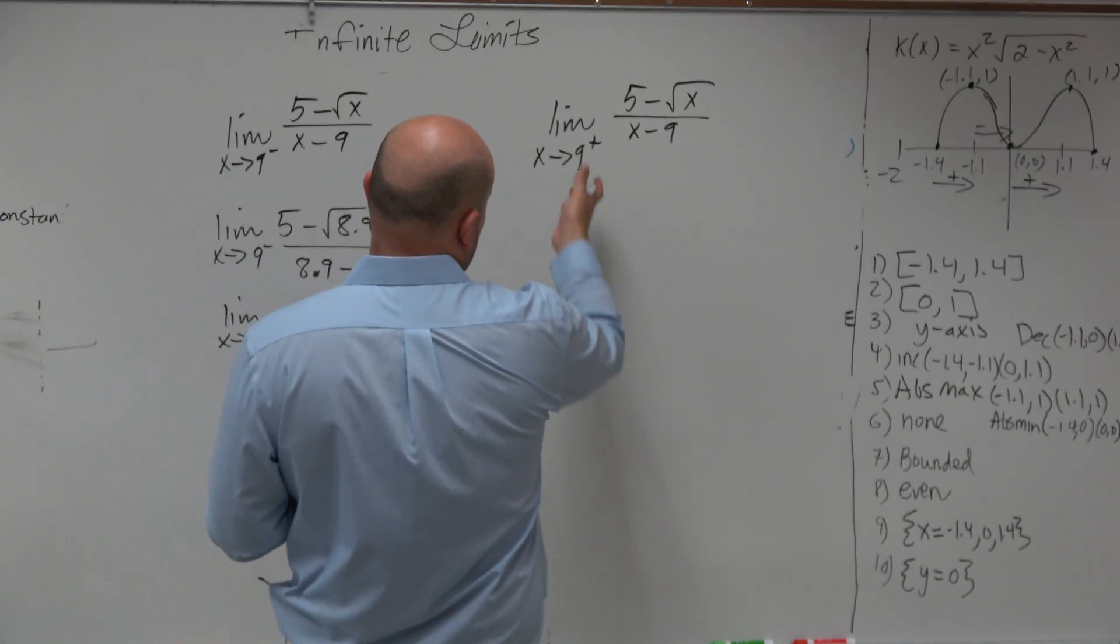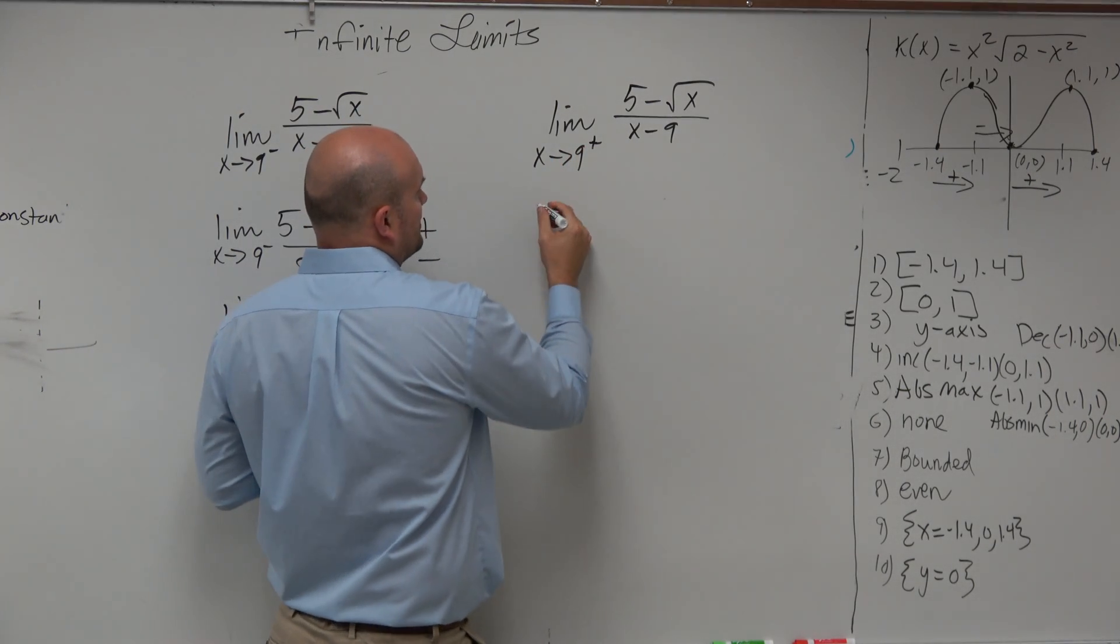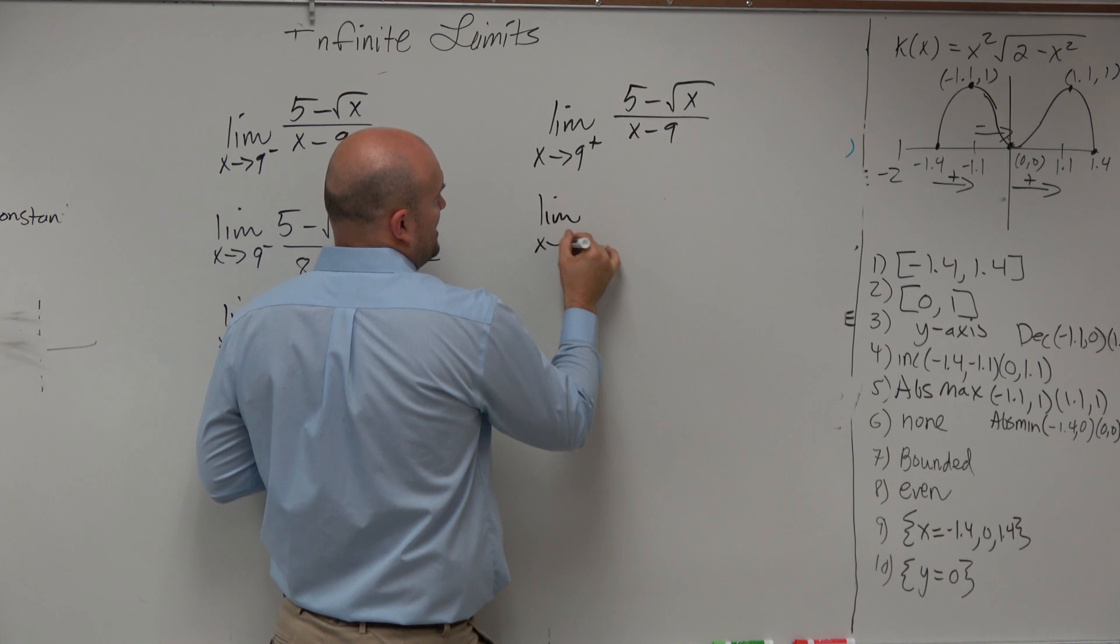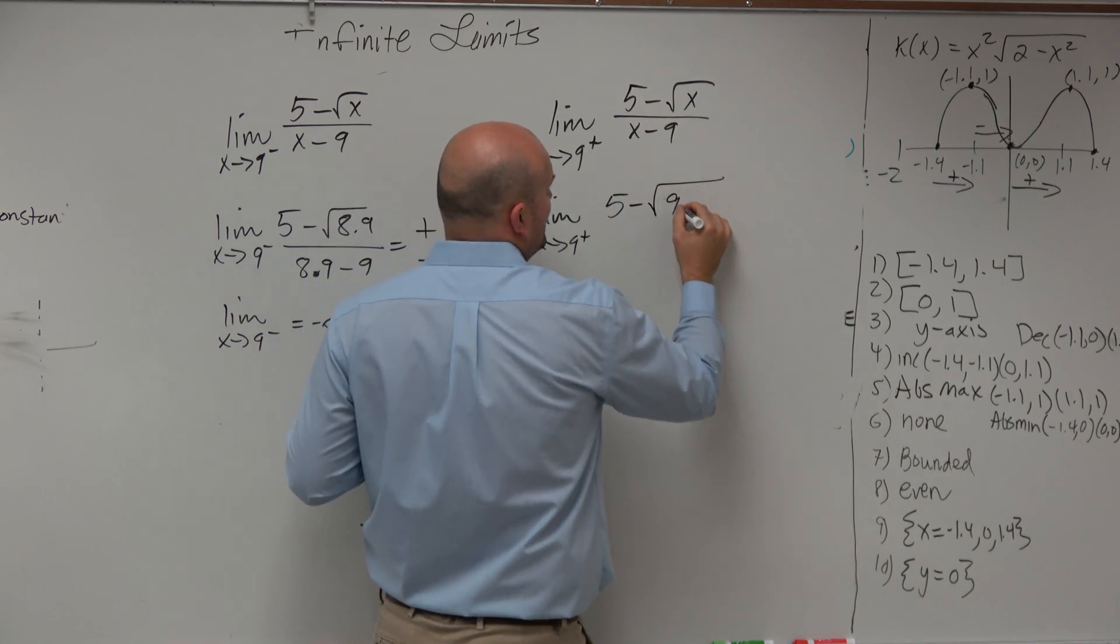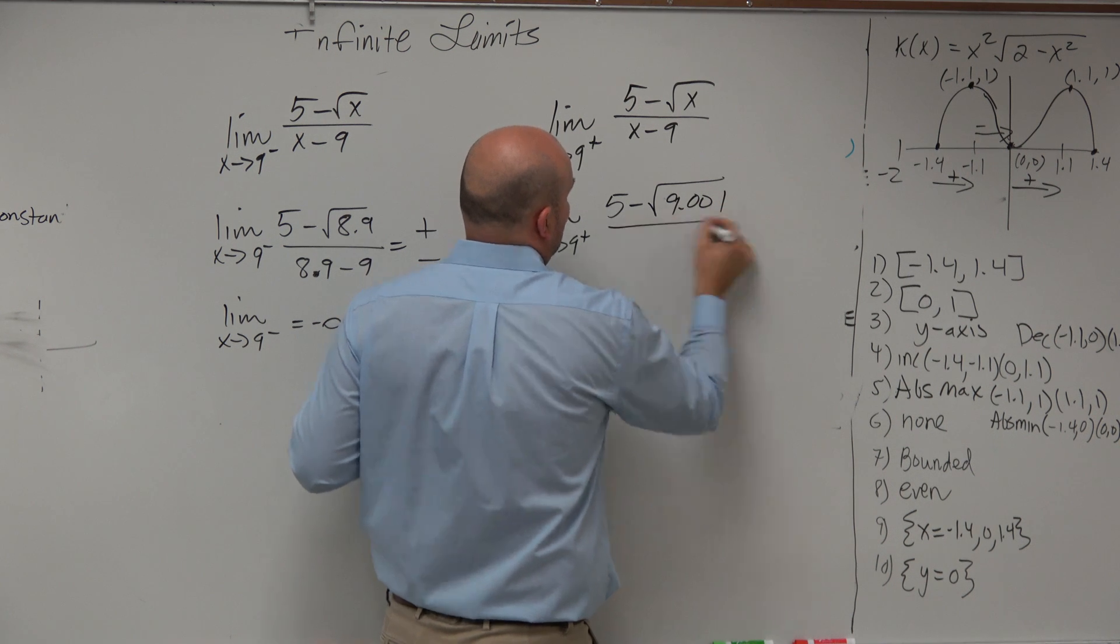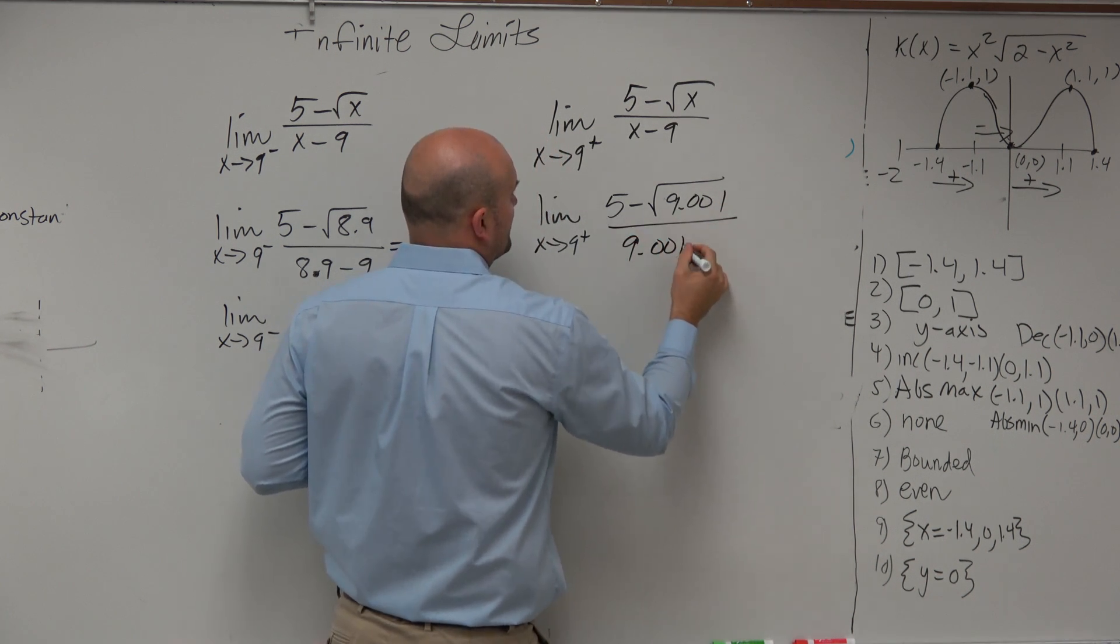If we're going to do the exact same thing over here, we want to choose values that are larger than 9. So we just write limit as x approaches 9 from the right of 5 minus the square root of 9.001 over 9.001 minus 9.